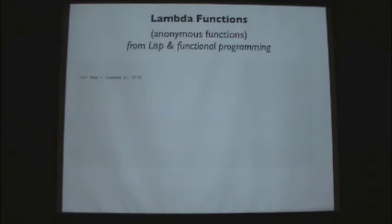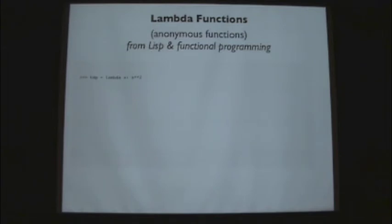We're going to get into some meta things that Python can do, and the breakout session I think will really highlight just how interesting and powerful Python is in this sense. Right now we'll talk about lambda functions. These are sometimes called anonymous functions, and this comes from Lisp and functional programming paradigms. Lambda only entered the Python language in maybe version 2.3 or 2.4, so it's fairly new to the language but it's now pretty baked in.